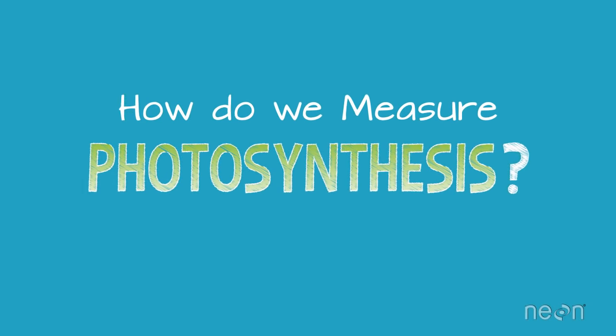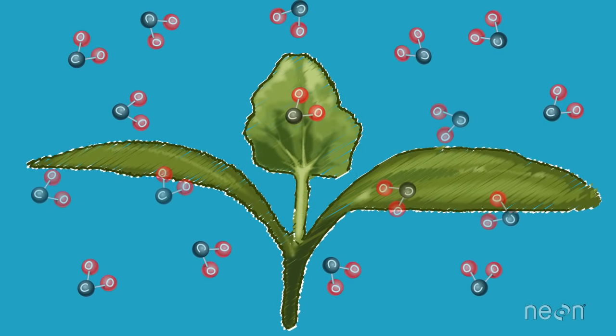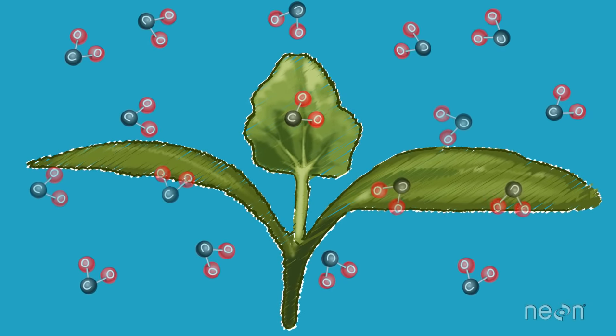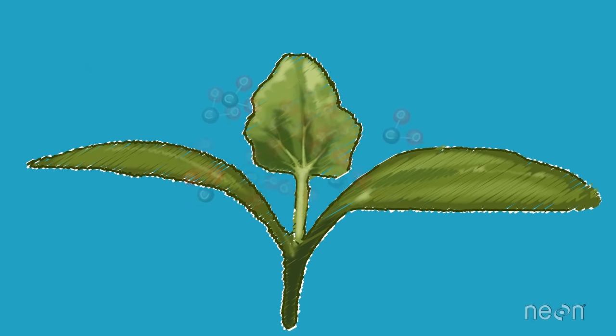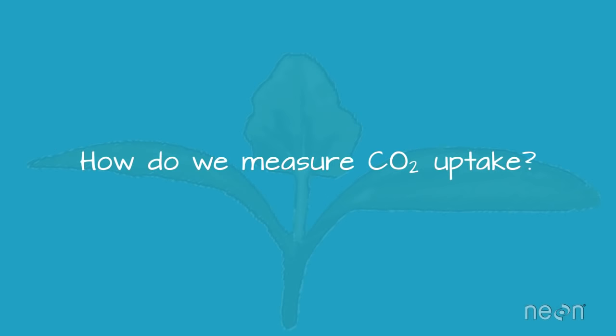Well, one way to measure photosynthesis is to measure how much CO2 plant leaves absorb. Because we know that a plant that is actively absorbing CO2 is also performing photosynthesis. But how do we actually measure CO2 uptake by a plant?